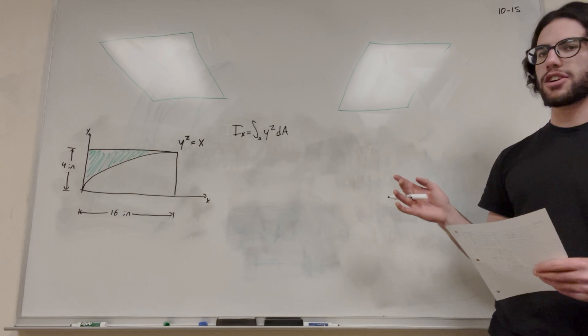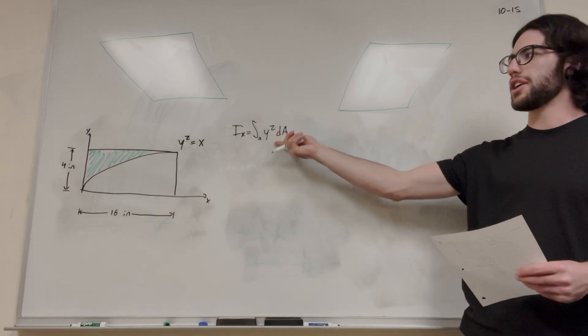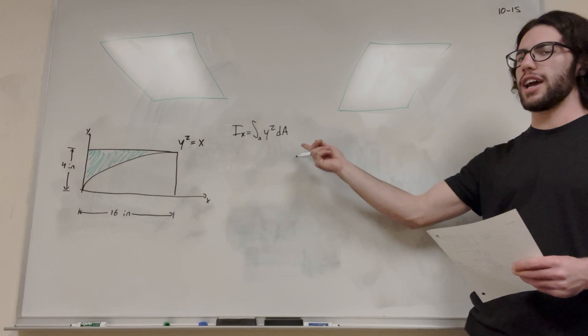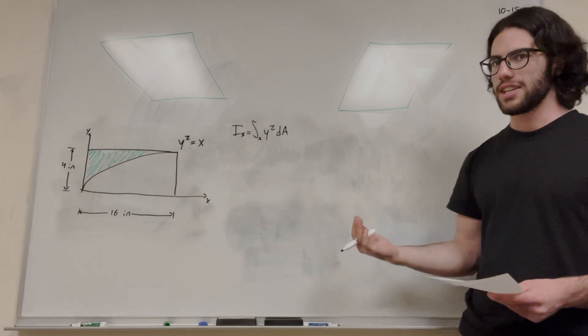We're trying to find the moment of inertia around the x-axis. We're going to use our formula here. So it's the integral over the area of y squared dA. So we need to find out what dA is.